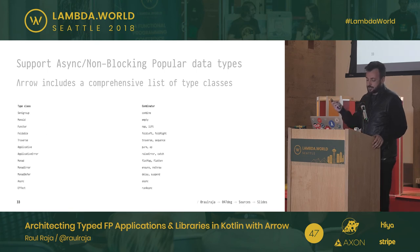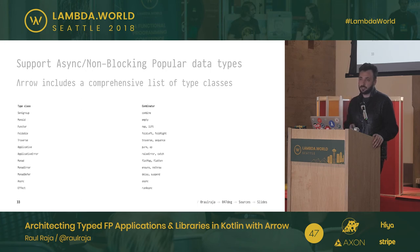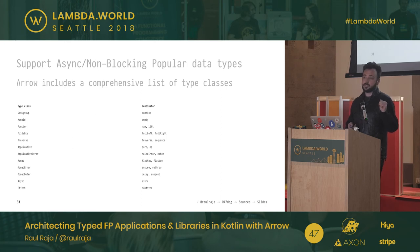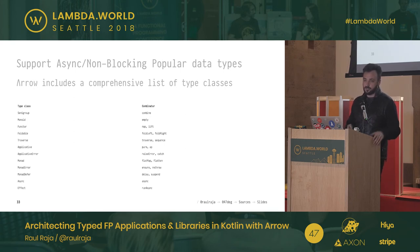Arrow has a full hierarchy of type classes: Semigroup, Monoid, Functor all the way up to Effect, plus MTL type classes. For those familiar with Cats Effect: `Async` and `Effect` will be familiar. What Cats Effect calls `Sync`, Arrow calls `MonadDefer`, because in the Kotlin community `sync` is associated with synchronous blocking code — so Arrow tries to disambiguate names to avoid confusion.